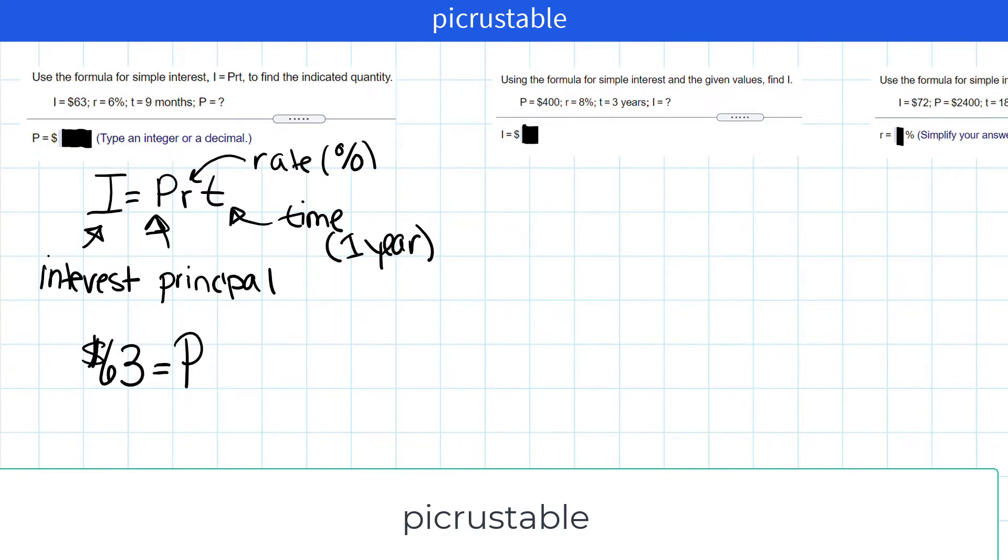We don't know the principal, so we're going to leave the P. Our rate is percent. Now we always have to change the percent to a decimal. So here's six percent. I move two places to the left. So we end up with 0.06.